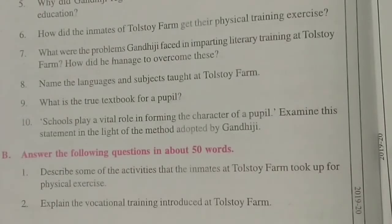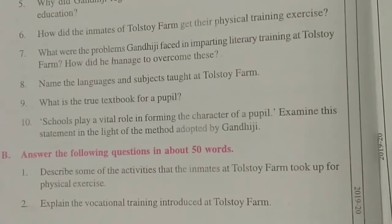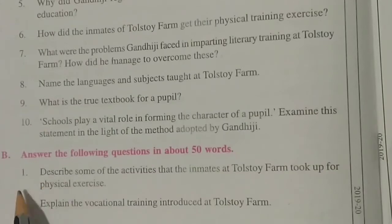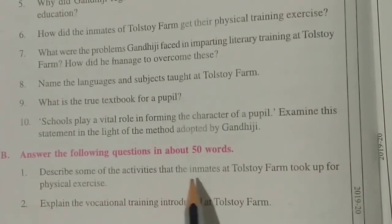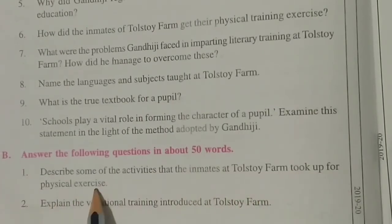Hello students. In previous videos we completed lesson number 20, 'Teaching at the Tolstoy Farm,' and we completed the comprehension 'Answer the Following Questions in about 25 words.' Today we are doing the answers in about 50 words. Question number one: describe some of the activities that the inmates at Tolstoy Farm took up for physical exercise.